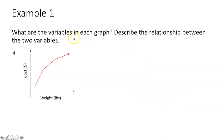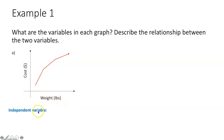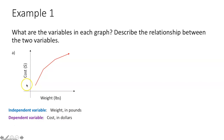It's example time. Example one says: what are the variables in each graph? Describe the relationship between the two variables. Along our x-axis we have weight in pounds, so our independent variable is weight in pounds. Along our y-axis we have our dependent variable, which is cost in dollars. How are these two related?